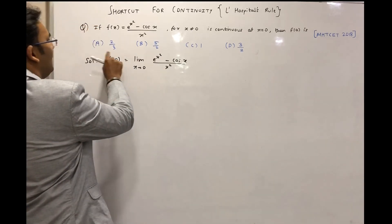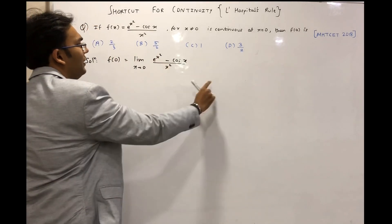So the options are 2/3, 5/2, 1, and 3/2.